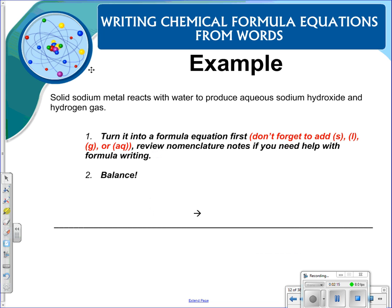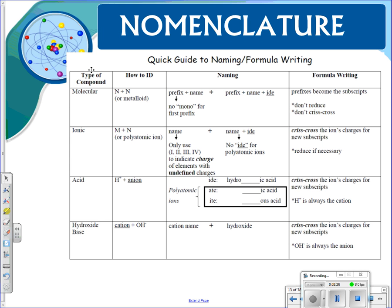So when you're writing your chemical formula equations from words, something very important to review is your nomenclature. That's actually on the next page in this chart, which is very helpful. So it shows you the four different types that we've learned: molecular, ionic, acids, and bases, and it gives you how to identify them, how to name them, and then in formula writing as well. So please review this chart if you're needing help with nomenclature.